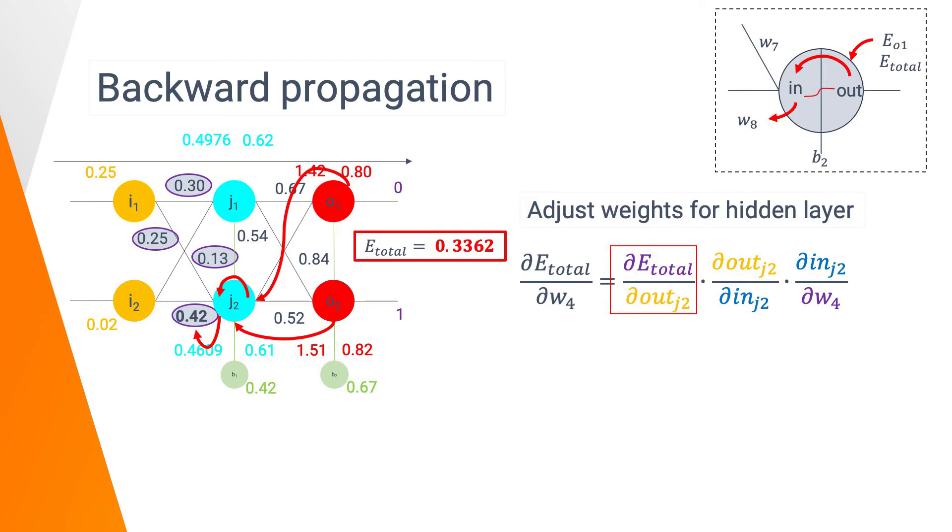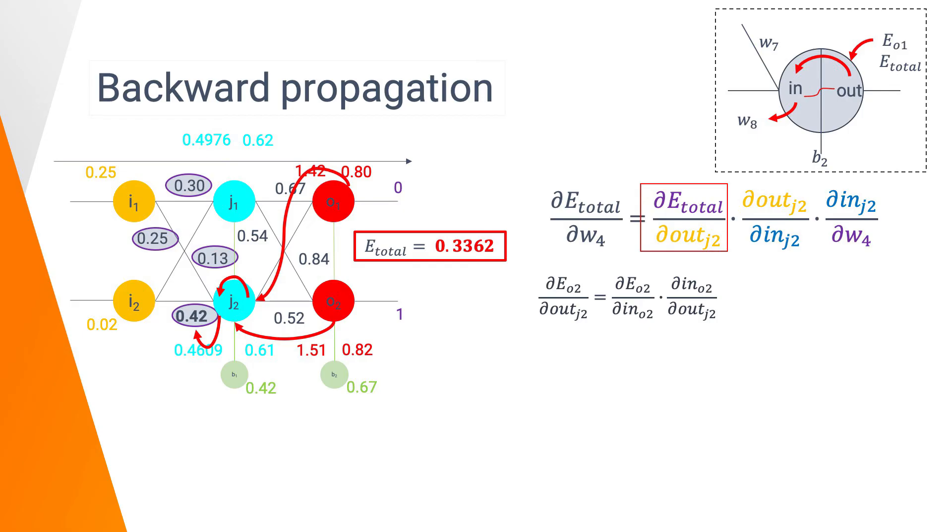Here, we are going to compute the new value for W4. So, as previously with the chain rule, we can write the partial derivative of the error total with respect of W4 as this formula. First, we can decompose the partial derivative of error total as the sum of the partial derivative of the error O1 and O2. And then, we can decompose each partial derivative. We can notice that the more we go back deeper, more the complexity increases. Imagine doing so for a layer of hundreds of neurons in a network of thousands of layers. It is why we have deep learning frameworks such as TensorFlow that we will use in the next video.